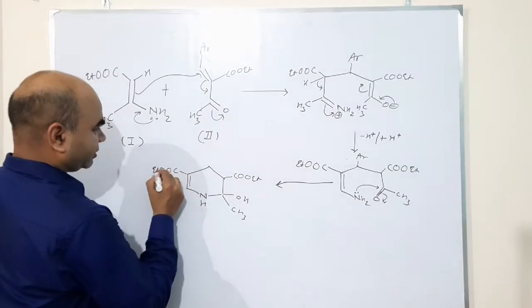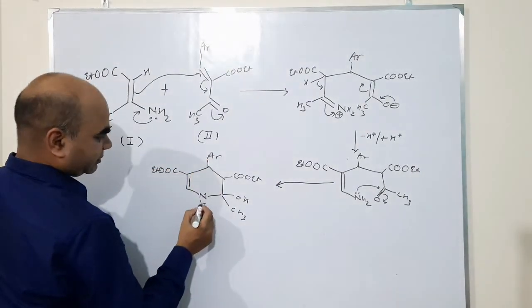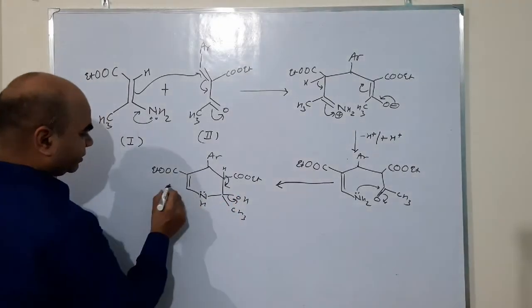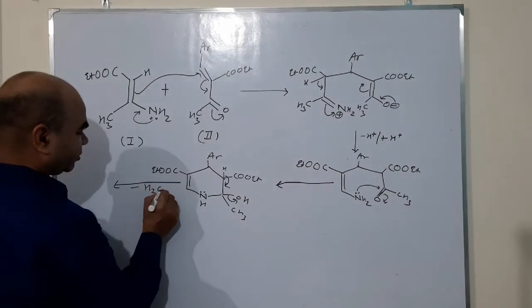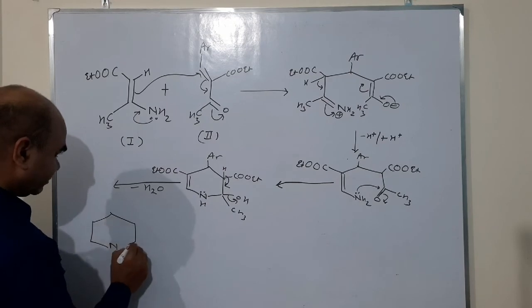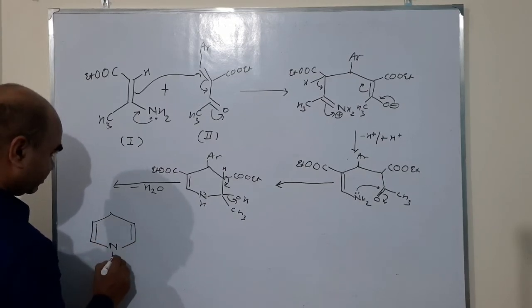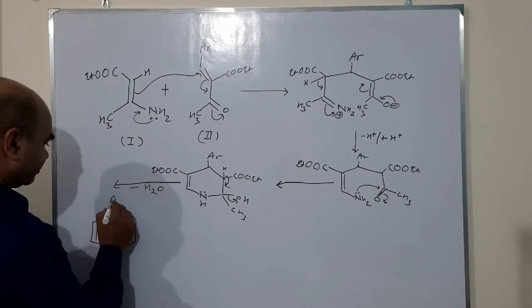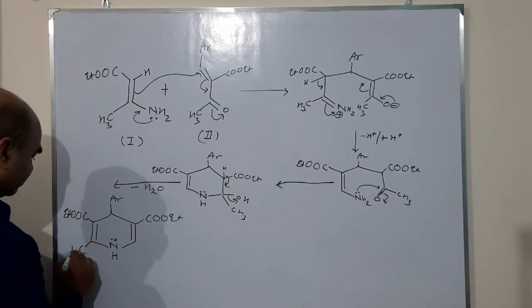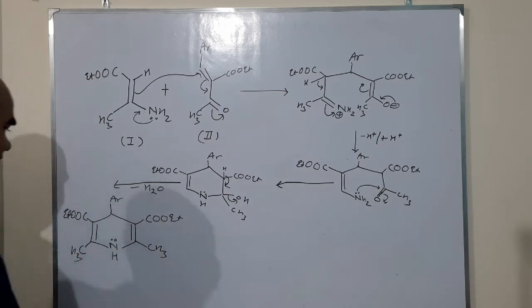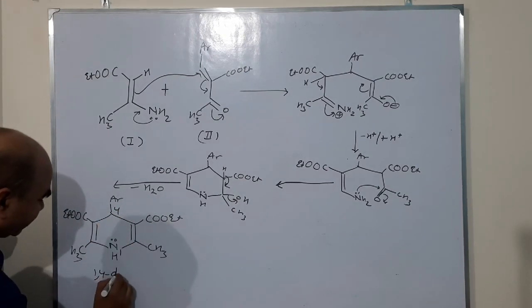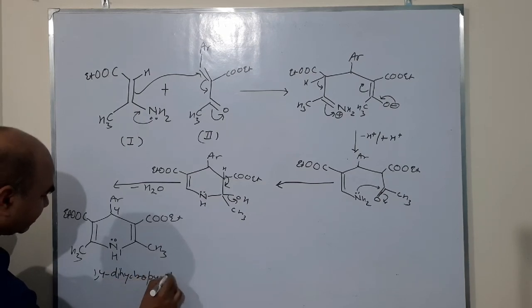Ester here—let's say this is primary amine. We have a proton here, and this will lead to removal of water, H2O, and it will oxidize to form the 1,4-dihydropyridine.